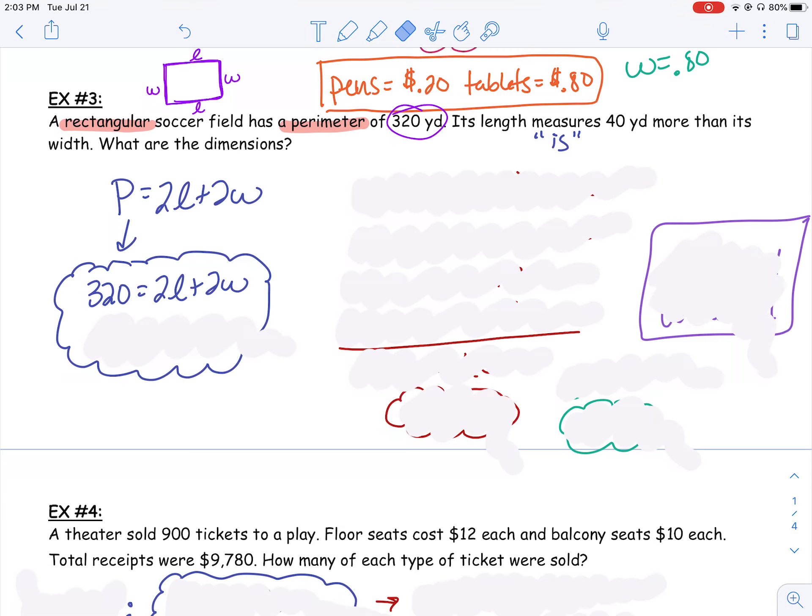But it's not just asking me for the width, it's asking me for the length too. So if I know that the width is 60 yards, how can I find the length? Well, a couple different ways. We can go back to our original equations, and we can plug in 60 for w and figure out what l is or what the length is.